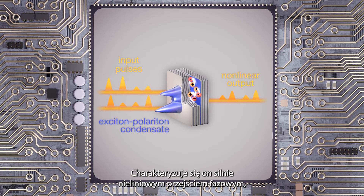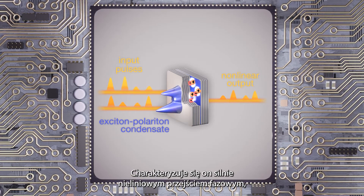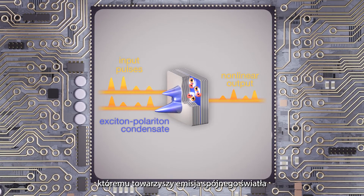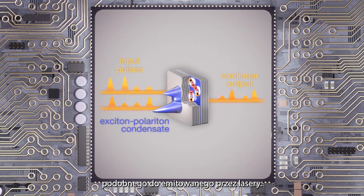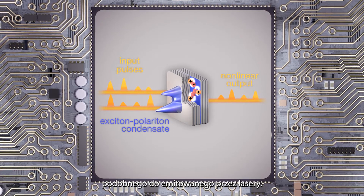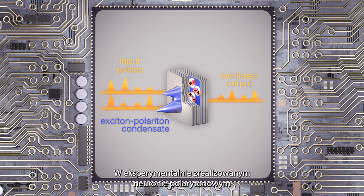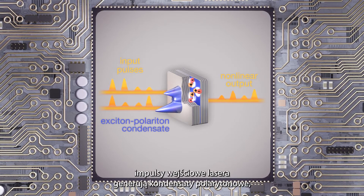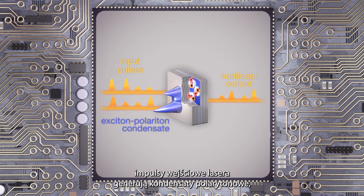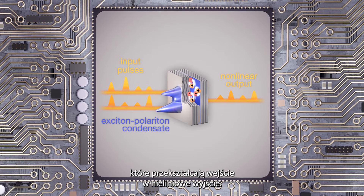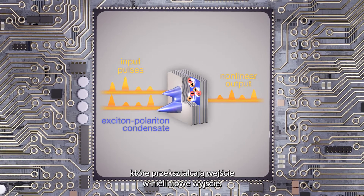It is characterized by a strongly non-linear phase transition with emission of coherent light similar to that emitted by lasers. In the experimentally realized polariton neuron, laser input pulses generate polariton condensate that can be transformed into a non-linear output.